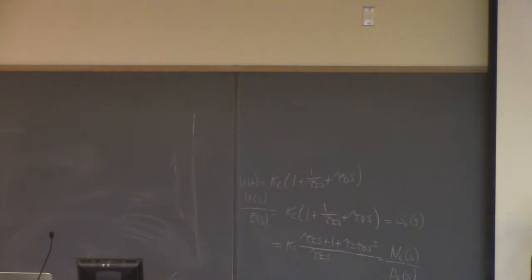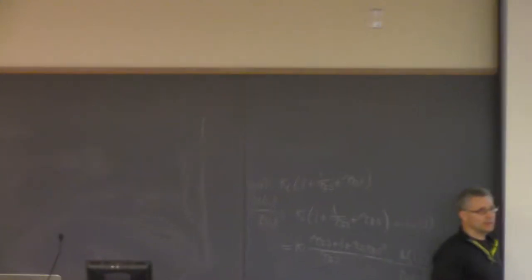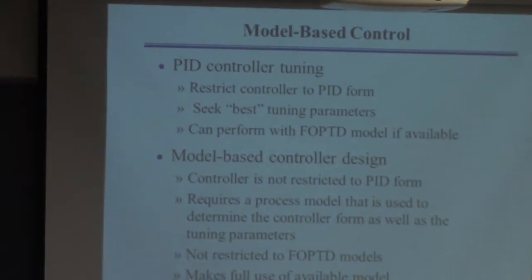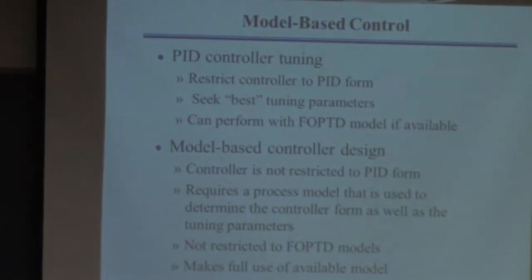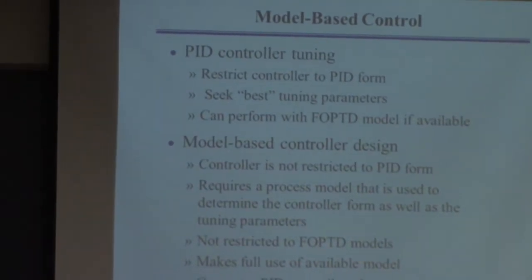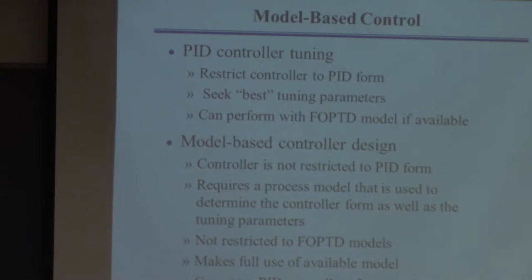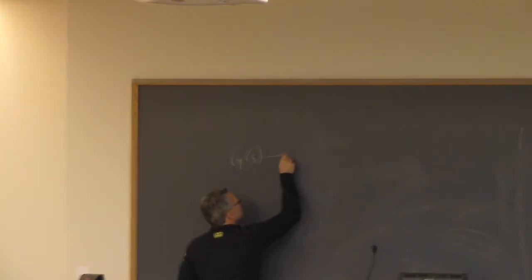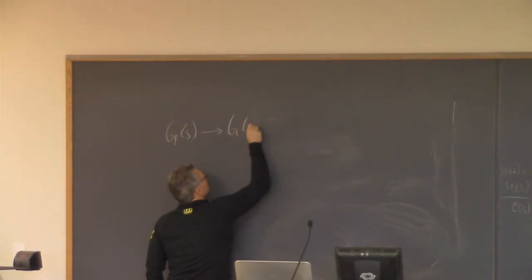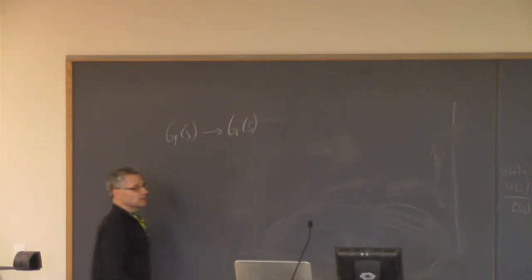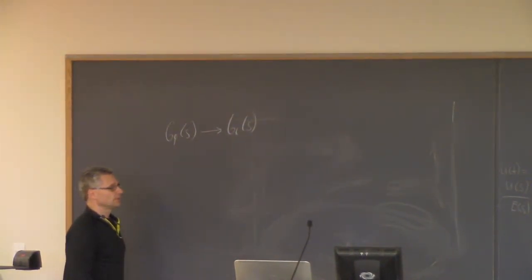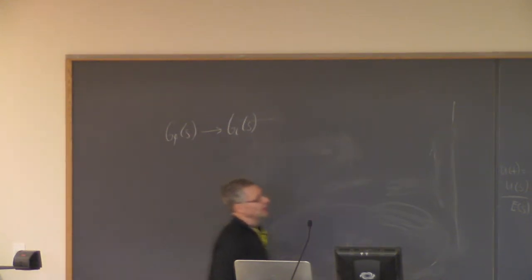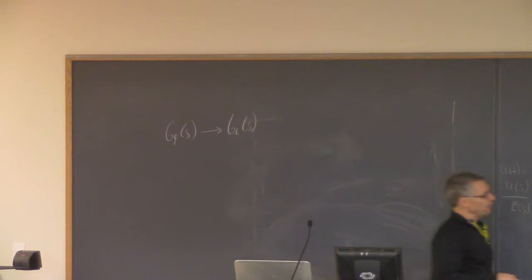To do these kinds of designs — it's called model-based design — you need a model. Everything we're doing here assumes there's going to be a transfer function model of the controller. The idea is: I give you the process transfer function, GP of S, and you give me back the controller transfer function for that.